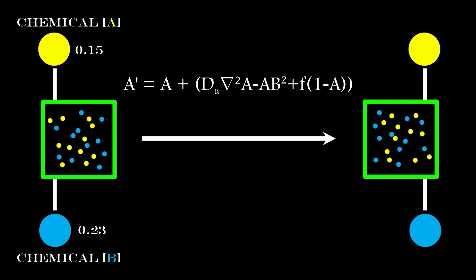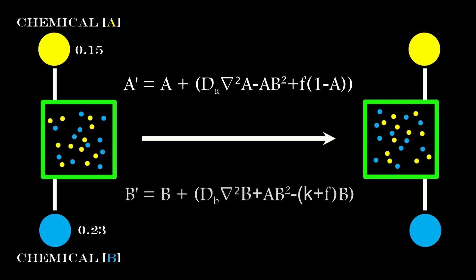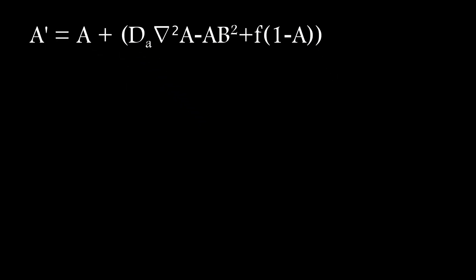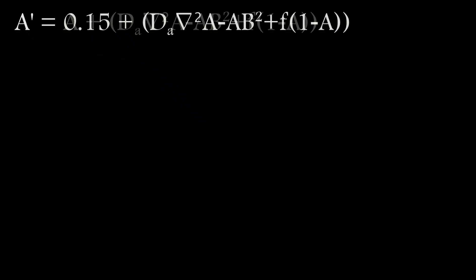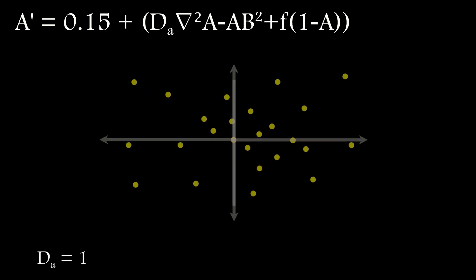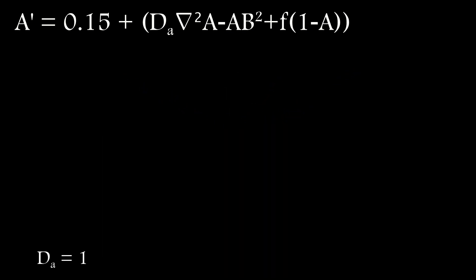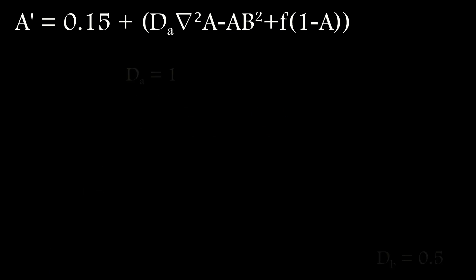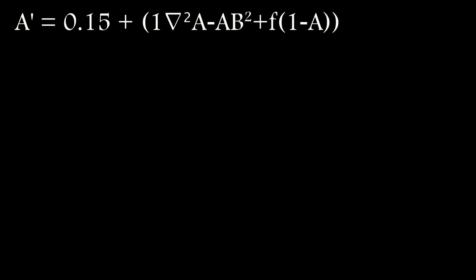This is done using just two equations. Let's take chemical A as an example. Its current concentration is 0.15, so I can just plug that straight in. Next is its diffusion term. This is the rate at which chemical A will diffuse through the medium, and it specifies that A will increase in proportion to the Laplacian of A. The DA component is just a scaling factor set to a value between 0 and 1 — here I've set it to 1.